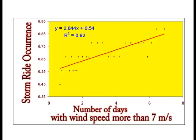There is also a correlation between the number of days with wind speed more than 7 meters per second within the west sector during the autumn-winter period and storm ridge occurrence. More days with high wind speed results in more storm ridge occurrence.